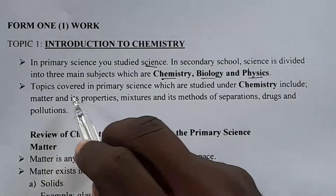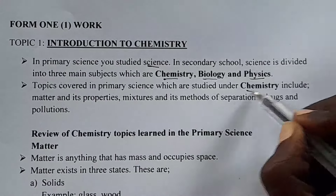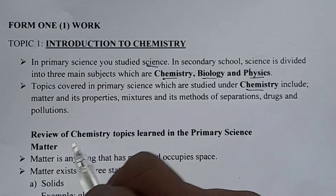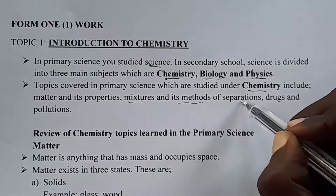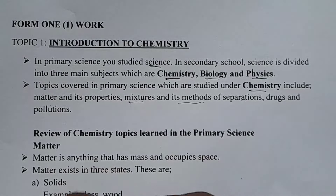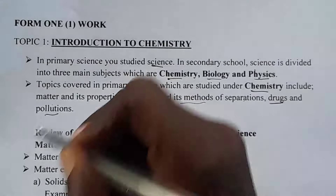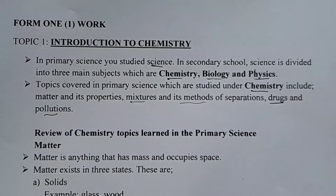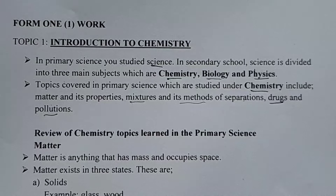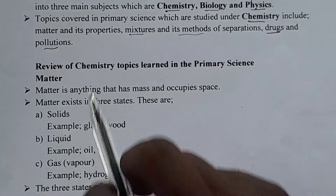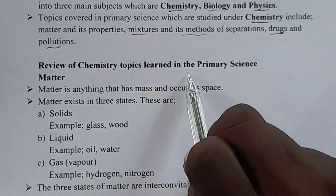The topics covered in primary school which are studied under chemistry include matter and its properties. Another one is mixtures and methods of separation — like filtration, winnowing, decanting, sieving, and others. Then drugs and also solutions. Those topics we have done in primary school, but we are also going to do them in secondary school chemistry. Let's go and do a review of chemistry topics learned in primary school.